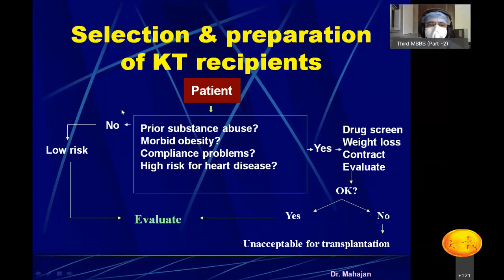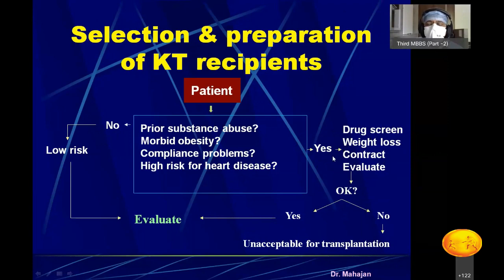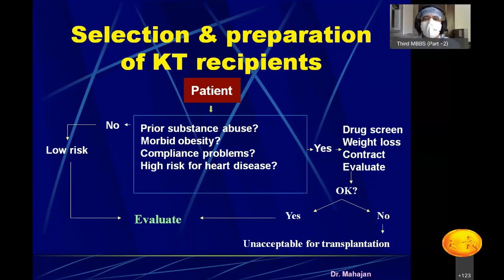You also check whether the patient is a high-risk candidate for cardiac diseases or for surgery and anesthesia. If these factors are absent, the patient is low-risk and you proceed to transplant evaluation. If any factor is positive, you perform drug screening, weight loss measures, patient counseling for drug compliance, and cardiac evaluation before proceeding. If conditions cannot be corrected, the patient is not acceptable for transplant at that time.